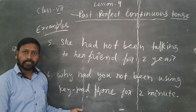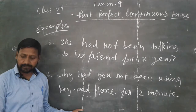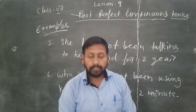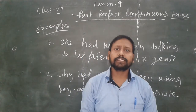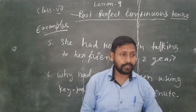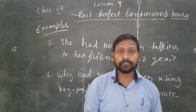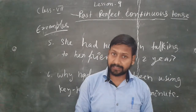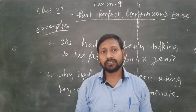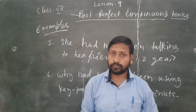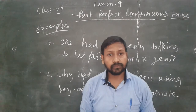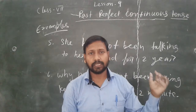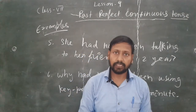So my dear students, these were some examples of past perfect continuous tense. By these examples you can understand what past perfect continuous tense tells us. You can create more examples, apply this chapter — it is a very simple and short chapter. If you have any doubt about using 'since' and 'for', you can watch video number four where we have taught how to use 'since' and 'for'.